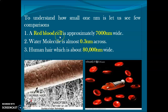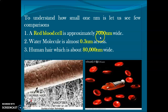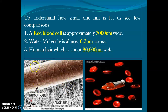In the human body, red blood cells are approximately 7,000 nanometers in size. A water molecule is about 0.3 nanometers. This SEM image of a human hair shows it is approximately 80,000 nanometers wide. These comparisons illustrate just how incredibly small the nanoscale is.